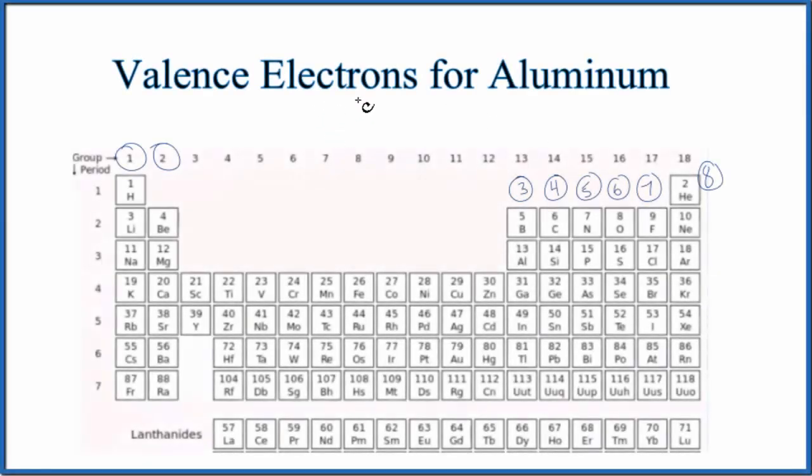In this video, we'll determine the number of valence electrons for aluminum, Al. There are two ways we can figure out the number of electrons in the valence shell for aluminum.